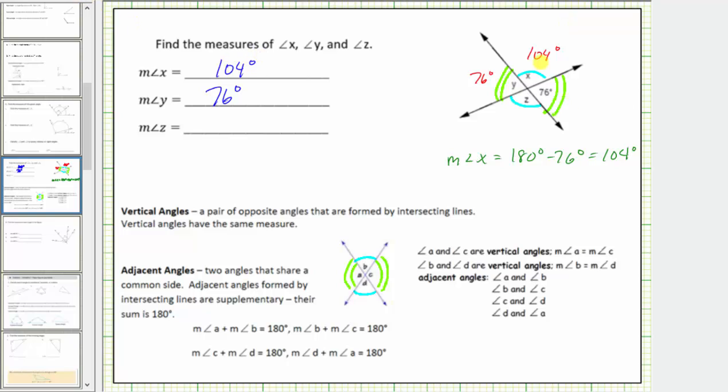Angle X equals 104 degrees. Finally, notice angle X and angle Z are vertical angles and therefore have the same measure. The measure of angle Z must be 104 degrees.